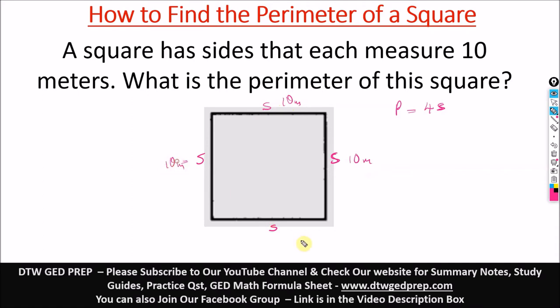So to get the perimeter is just a summation of all the sides. The formula to use is 4 times s, which is equal to 4 times 10, and that's 10 meters. That would give you 40 meters. So the perimeter of this square is 40 meters.